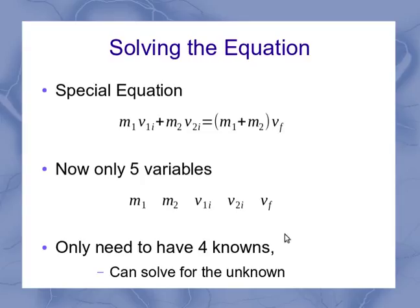A very common setup of the problem, but certainly not the only one that's possible, is to give the masses and initial velocities, which specifies the entire initial condition of the system, and then ask for the final velocity. But you could solve it for any one of the unknowns, as long as you knew the four other quantities.